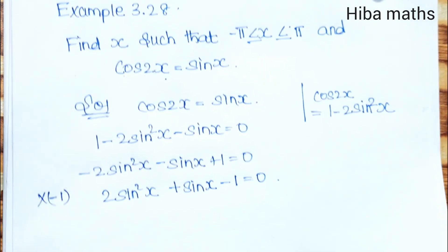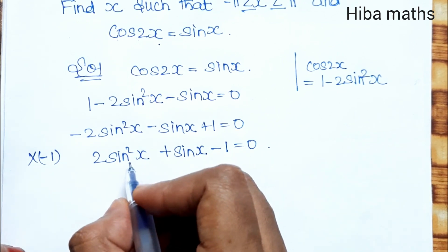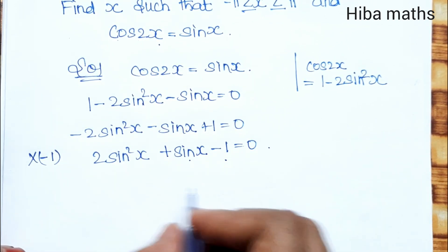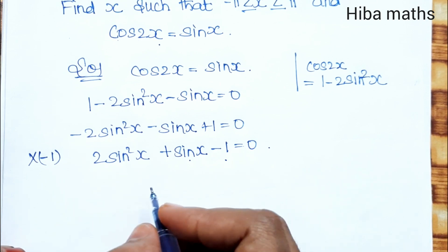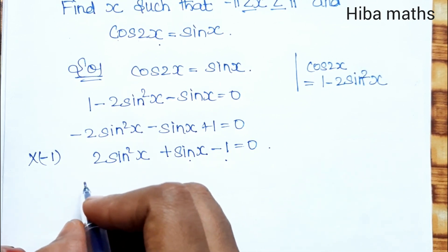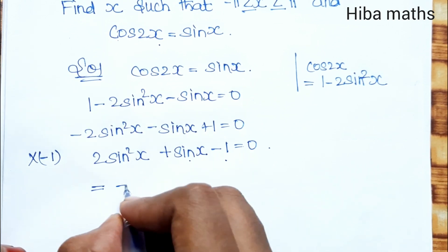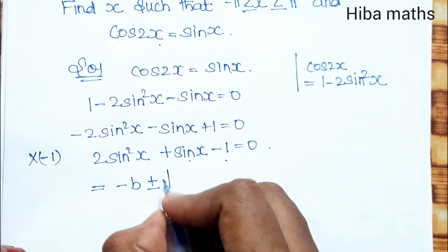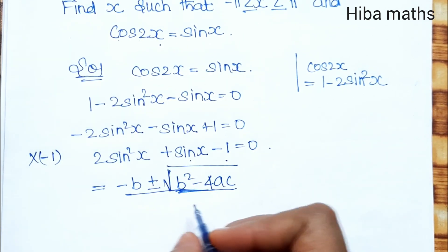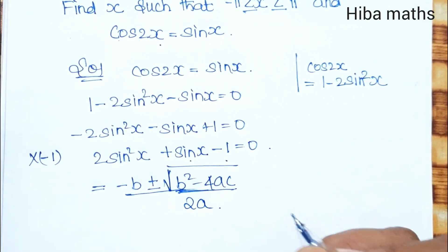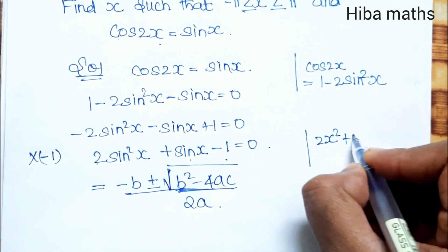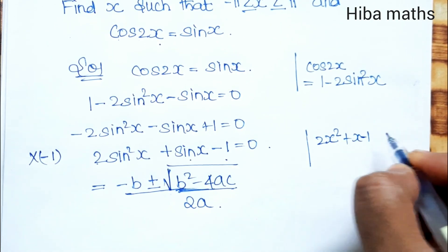This simplifies to 2sin²x plus sinx minus 1 equals 0. We use the quadratic formula: x equals minus b plus or minus root of b squared minus 4ac, divided by 2a. We treat sinx as the variable, giving us the form 2x² plus x minus 1.